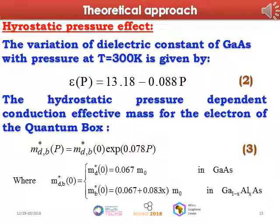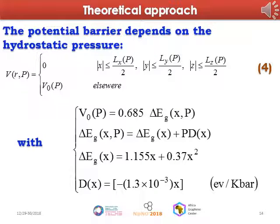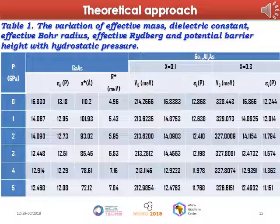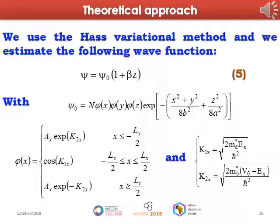The dielectric constant and the conduction effective mass for the electron of the quantum box vary with hydrostatic pressure according to relations number two and three respectively. The potential barrier depends on pressure and concentration of aluminum according to expression number four. Table one presents the variation of effective mass, dielectric constant, Bohr radius, effective Rydberg, and potential barrier height with hydrostatic pressure for the well material and the barrier material for two concentrations of aluminum: X equal to 0.1 and 0.3.